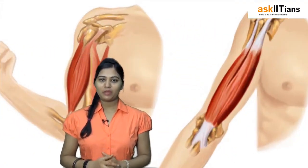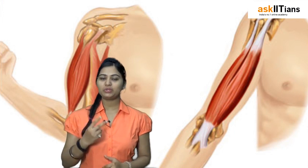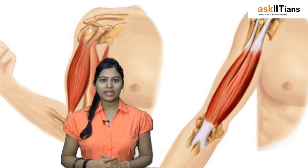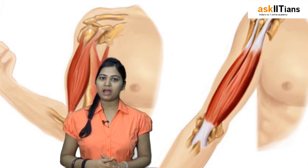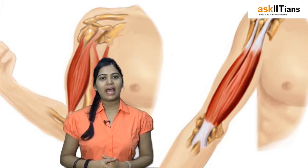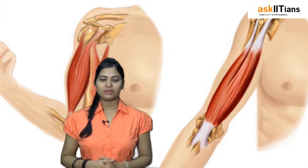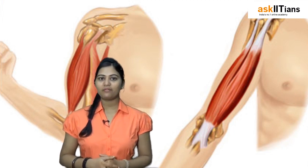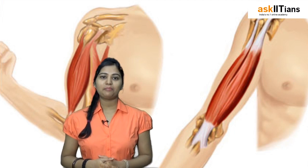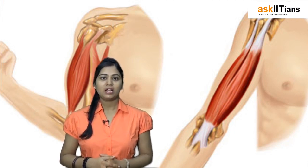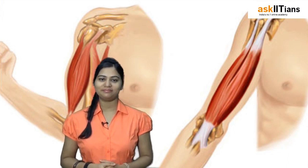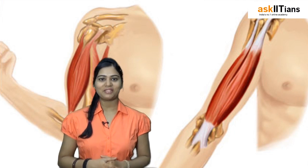This topic will be divided into two videos. Under the first video we will take what is a muscle fiber, the parts of a muscle fiber, and we will discuss about the muscle proteins. In our second video we will see the complete process of muscle contraction, which is known as the cross bridge cycle or the sliding filament theory. So let's begin with the first part.